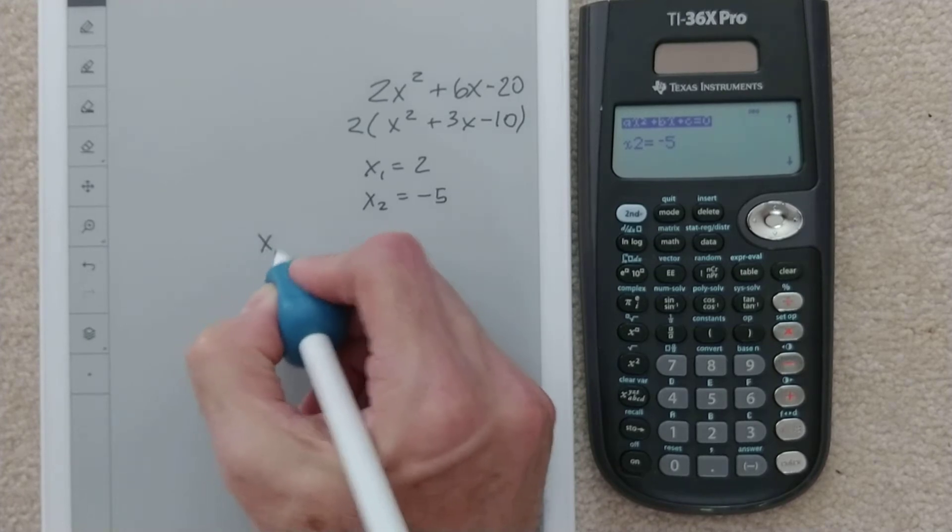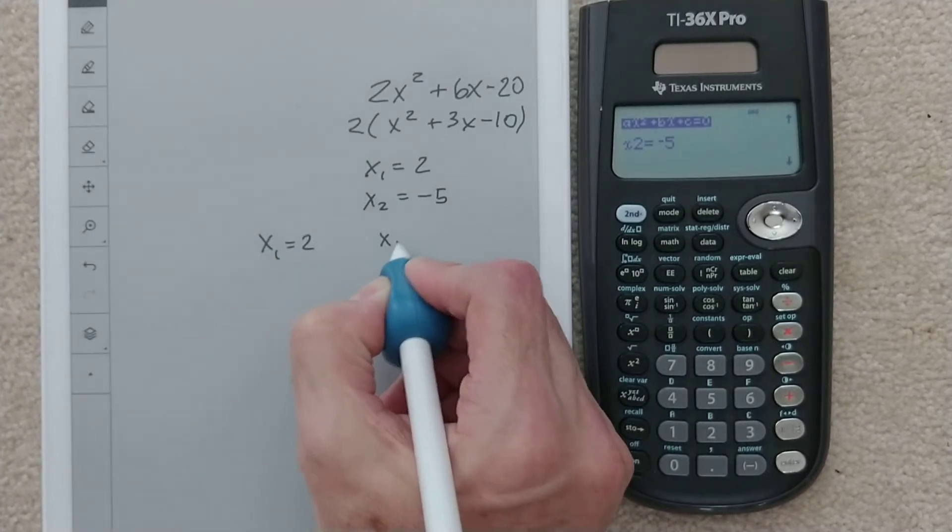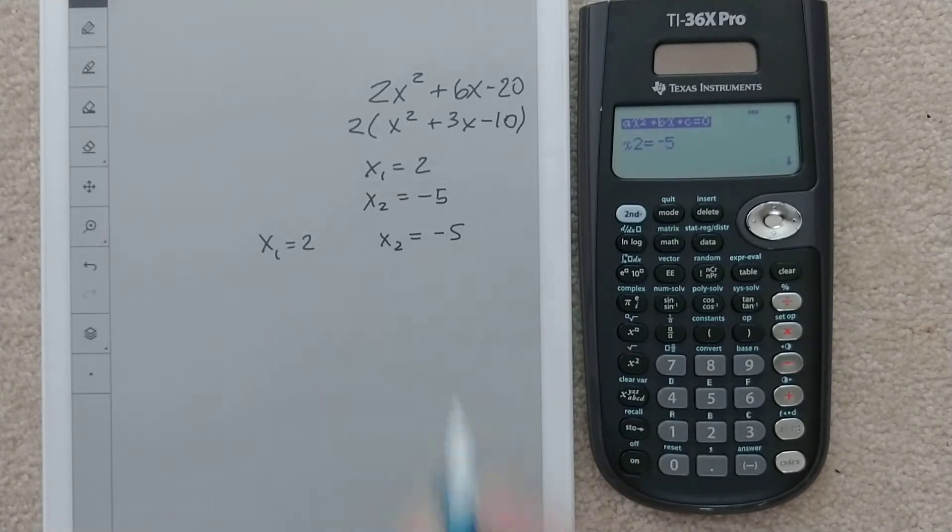I should have written it like this. So x₁ is 2, and x₂ is negative 5. Those are our two roots. x can be 2 or negative 5.